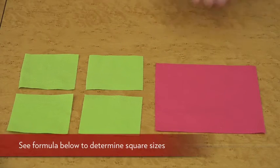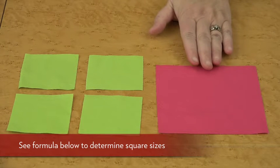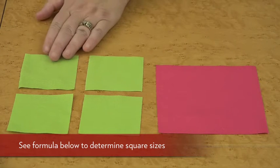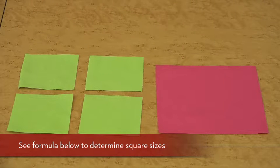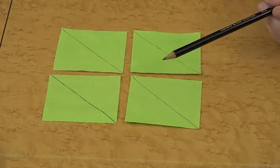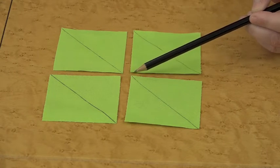First of all, you'll need one square that's the background and then you'll need four smaller squares that are the little triangles on each side. Draw a diagonal line on all four squares.